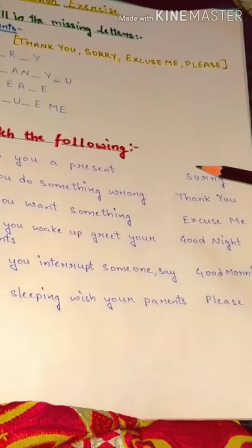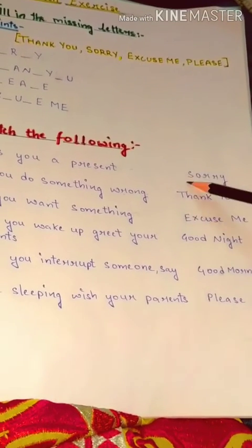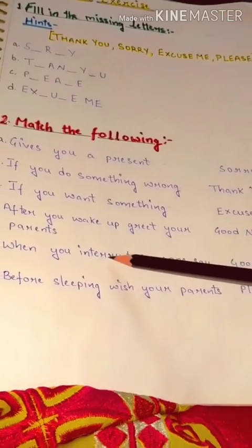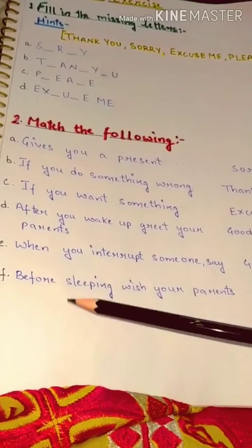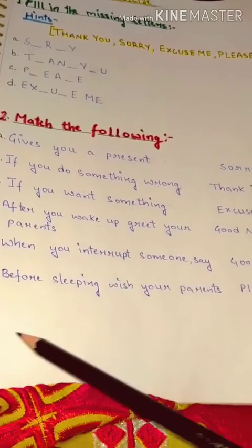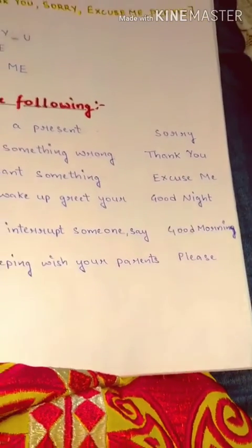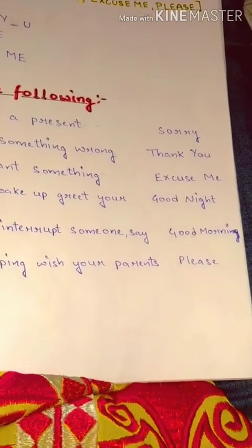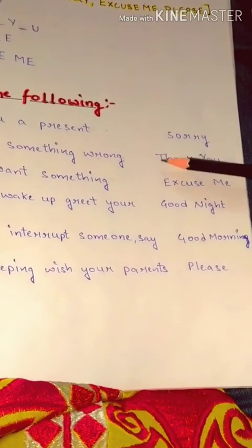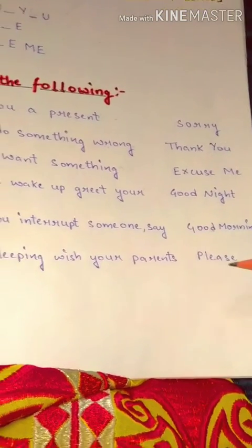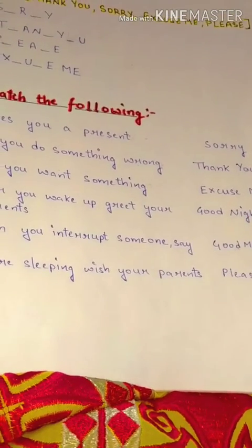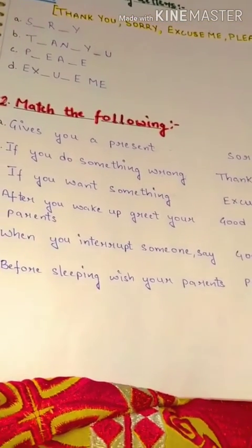Number E: when you interrupt someone, what will you say? Find that golden word and draw a line from the sentence to the matching word. Number F: before sleeping, wish your parents. Before you go to sleep at night, what will you say to your parents? Yes, good night. Find the word 'good night' in the column and draw a line to it.